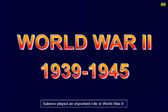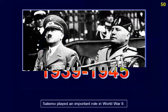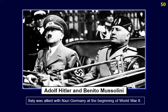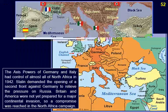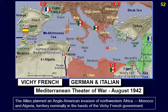Salerno played an important role in World War II. Italy was allied with Nazi Germany at the beginning of the war. The Axis powers had control of almost all of North Africa in 1942. Stalin demanded the opening of a second front against Germany to relieve pressure on Russia, but Britain and America were not yet prepared for a major continental invasion. A compromise was reached: the allies planned an Anglo-American invasion of northwestern Africa — Morocco and Algeria, territory nominally in the hands of the Vichy French government.